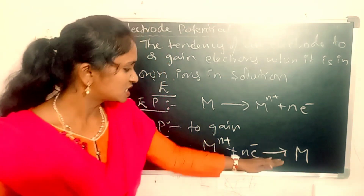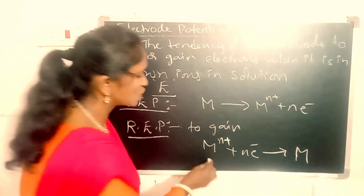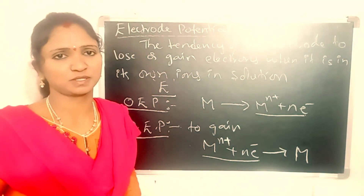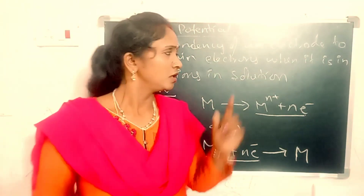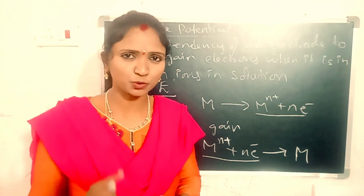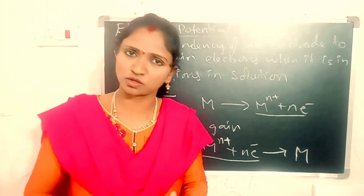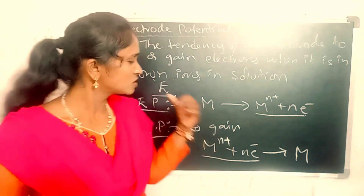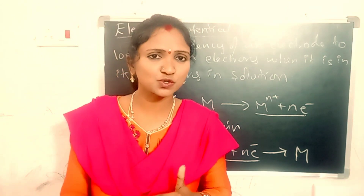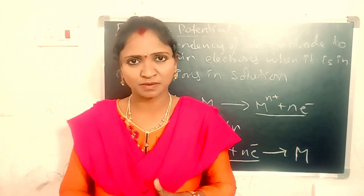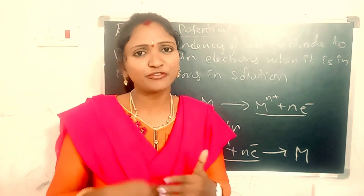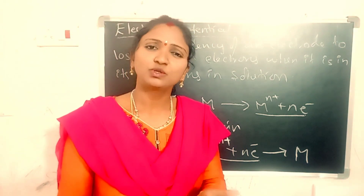Gaining of electrons is called reduction, and loss of electrons is called oxidation. So: electrode potential means the tendency of an electrode to lose or gain electrons. Oxidation electrode potential means tendency to lose electrons. Reduction electrode potential means tendency to gain electrons.